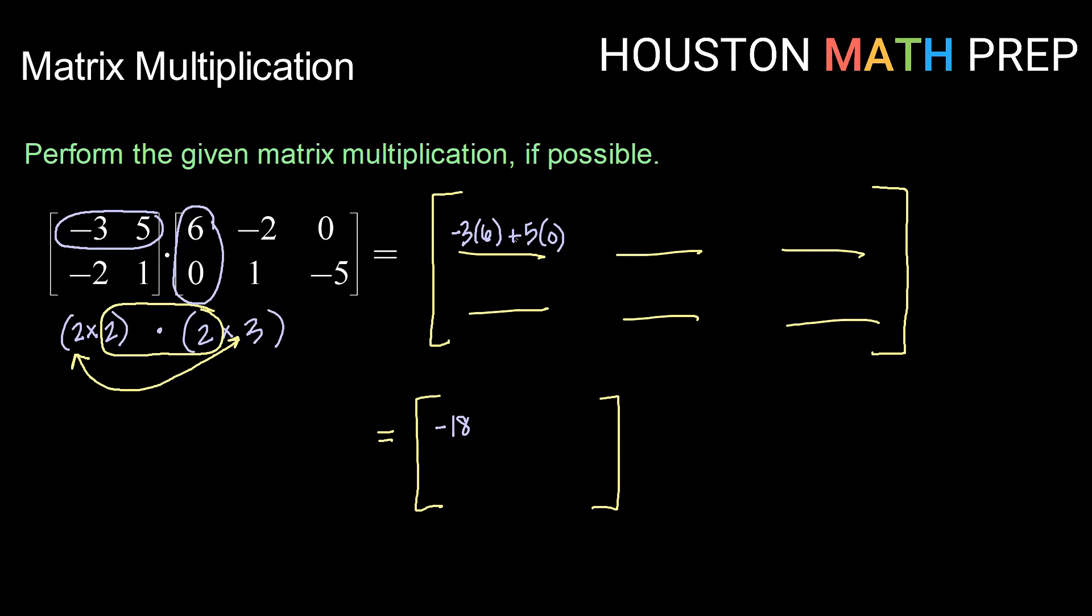Now we continue working along the top row. We're going to take row 1 and distribute it to column 2. That's going to give us -3 times -2 plus 5 times 1, or 6 plus 5 is 11. Finishing up that top row, we're going to once again take the first row and now distribute it to the third column. So we'll have -3 times 0 plus 5 times -5, or 0 plus -25 is -25.